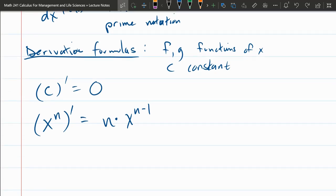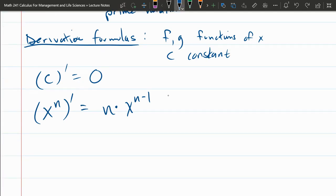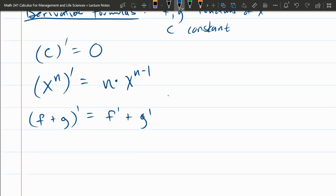All right, next up is the sum rule. So if you have two functions, f plus g, derivative, if you add them, the derivative is the derivative of f plus the derivative of g. Constant multiple: c, a constant times a function derivative, that is c times the derivative of f. And that means you can basically bring a constant in front of a derivative.